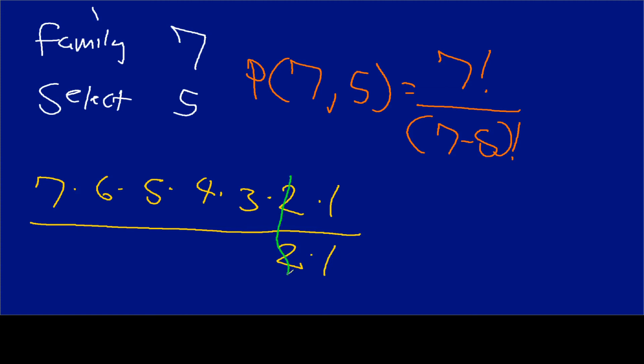So now we just do some basic crossing off here. So we get rid of this two and we get rid of this one. And so we're left with seven times six times five times four times three. And so if I were to put that in the calculator, seven times six times five times four times three, we get the answer of 2,520. So out of a family of seven, if I select any five of them, there are 2,520 different distinct combinations, or you can call them permutations of this particular instance.